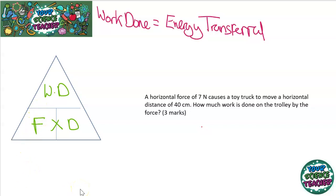What you need to do is you need to look at the parameter you're trying to work out. And if you want to work out work done, for example, you cover up work done with your hand, or you can scribble it out. And you can see when I scribble it out, that work done is equal to force times distance.